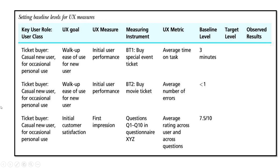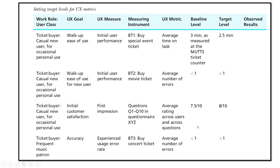Looking at the table, for the special event task — which is for the existing system — the baseline is 3 minutes. The number of errors the user should make is less than 1, meaning no error should be made, and the questionnaire rating should be 7.5. For the target, the task should be completed in 2.5 minutes, the number of errors is less than 1, the average rating is 8 out of 10, and the number of errors for the new task is also less than 1. We have now seen the meaning of UX goal, measure, measuring instrument, metric, baseline level, and target.